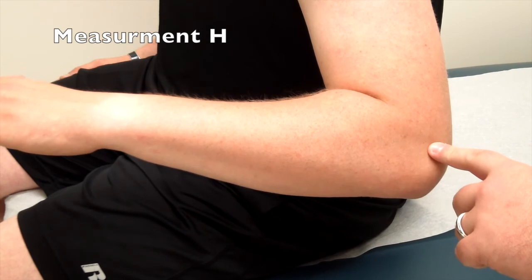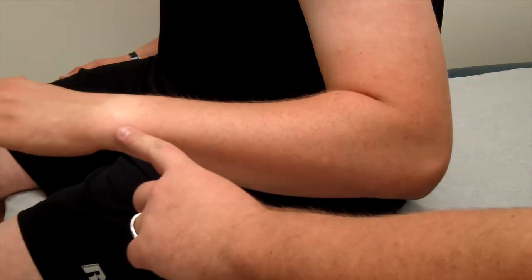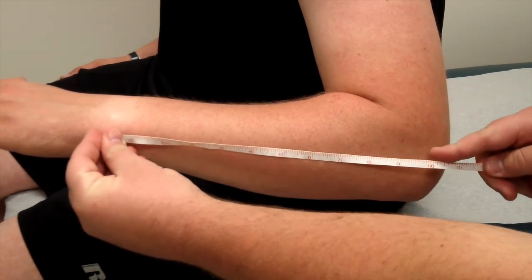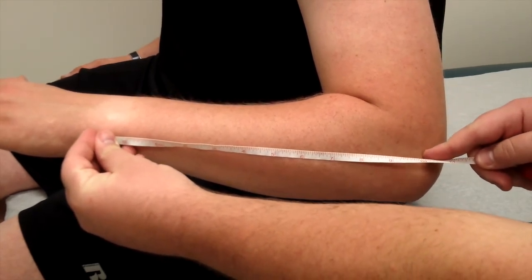Measurement H. Locate the ulnar styloid and the lateral epicondyle. The lateral epicondyle is the bony protuberance on the lateral side of the elbow. Measure the distance between these two points.